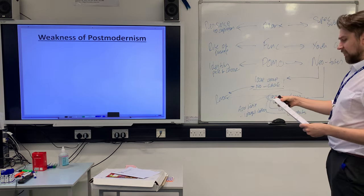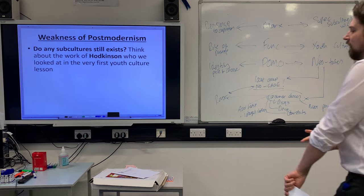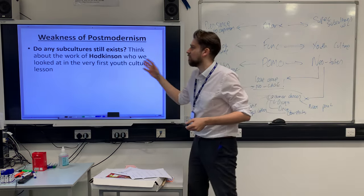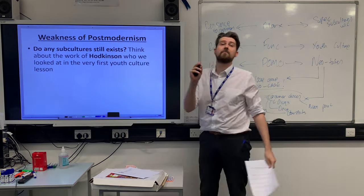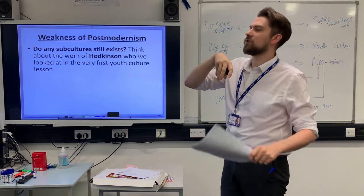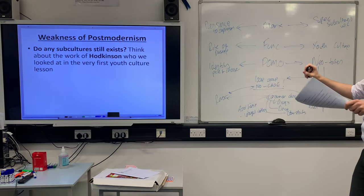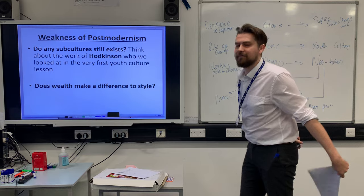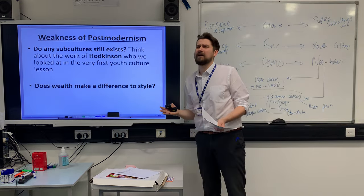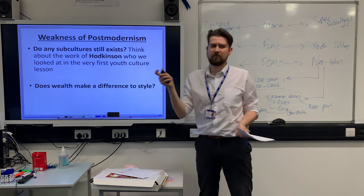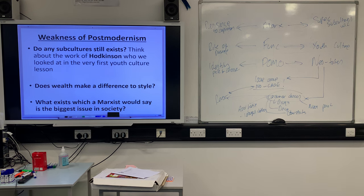On page four you should have evaluation points for postmodernism. Here are the prompts. First: do any subcultures still exist? Think about the work of Hodkinson, who we looked at in the very first lesson — that's a prominent subculture that might still exist today, and when you're in it you're in it for a very long time. Second: does wealth make a difference to style, and if so, how? We're saying postmodernism is all about style, but surely your income and wealth affect the style choices you can make. Third: what does a marxist say is still the biggest issue in society? Pause it and think about those prompts.